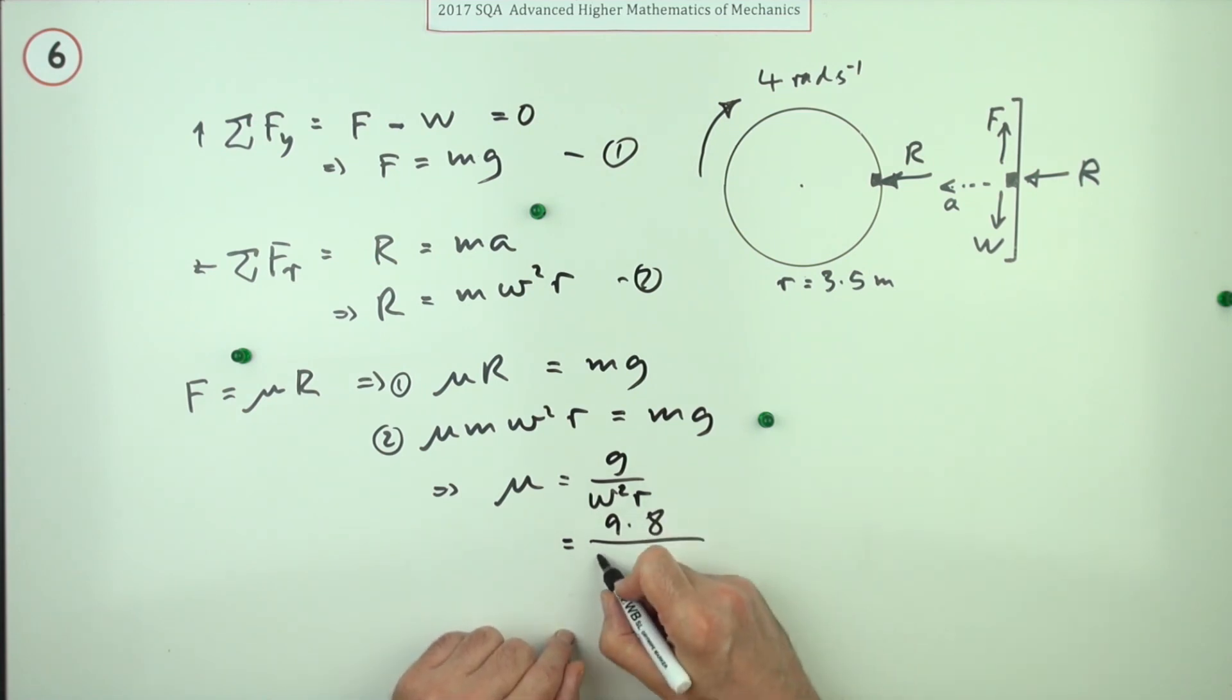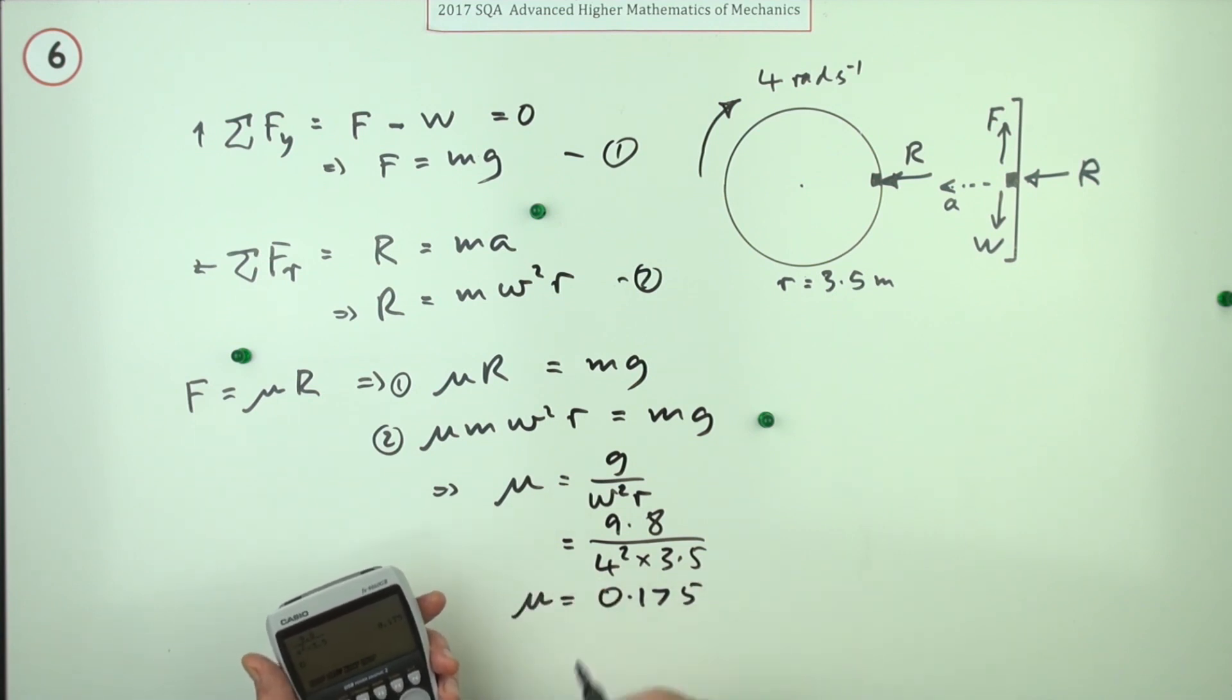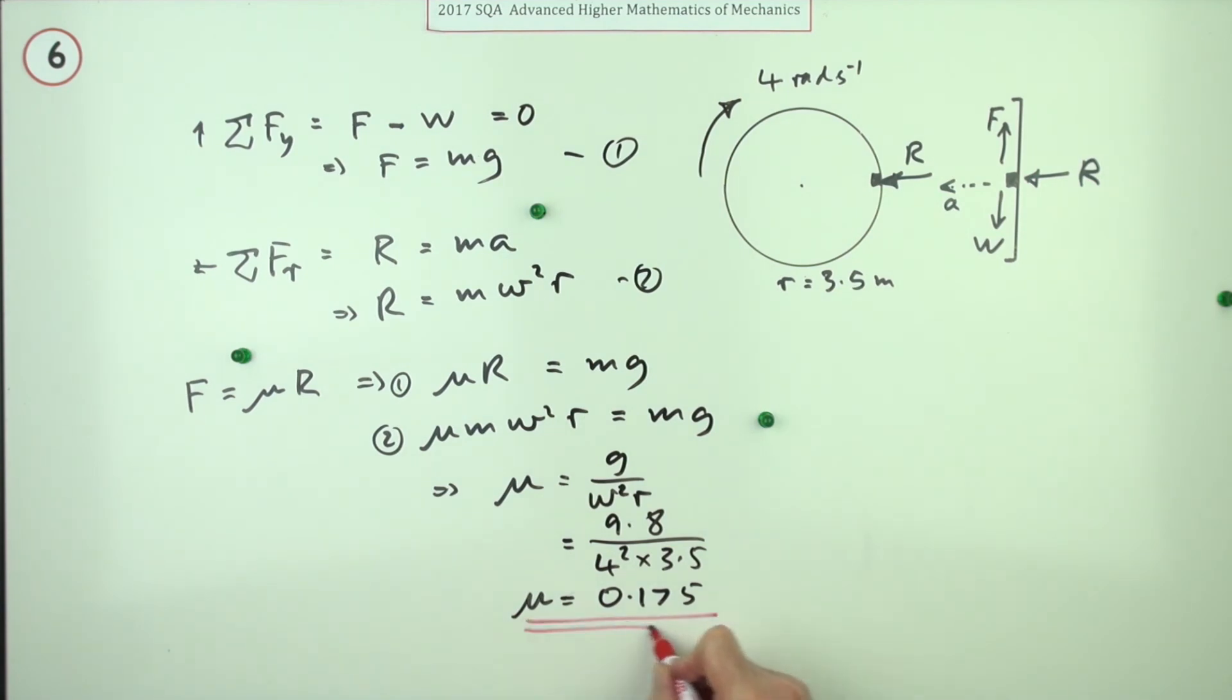9.8 over 4 squared times 3.5, which when you pop it in gives you 0.175 for the coefficient, the minimum coefficient of friction. If it was any less you would slip down. If it was any greater you'd still just be stuck there. 0.175.